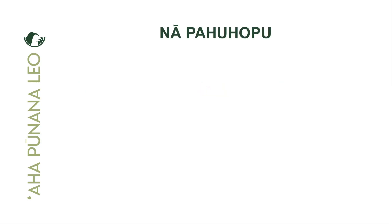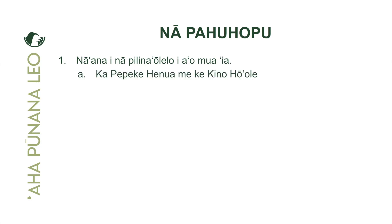Na pahu hopu — our goals for this Ha'avina. First, helu e kahi: we're going to review grammatical patterns and structures that we previously learned, focusing on ka pepekehenua me ke kino ho'ole. The pepekehenua tells us the location of someone or something in space or time — this is how we tell people where things are located. We're going to review the pepekehenua in both its positive and negative forms.